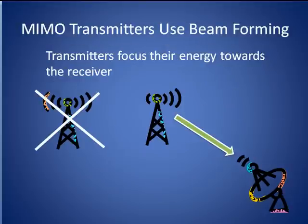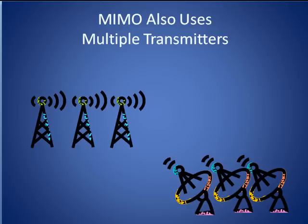Now let's take a look at the transmit side of MIMO. MIMO transmitters use a technology called beamforming to focus their transmit energy towards the receiver. That way, more of the signal gets to the receiver while less is wasted heading in other directions. In addition, as the name MIMO implies, MIMO uses multiple transmitters. These transmitters can simultaneously transmit the same signal, or they can transmit different signals all at once depending on the system configuration. The number of antennae at the receivers in a MIMO system is always greater than or equal to the number of antennae at the transmitters. Thus, MIMO is able to achieve faster transmission speeds using these techniques.